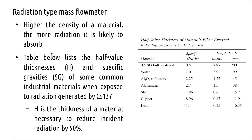To measure density using radioactive sources: if a liquid flowing through a pipe is more dense, it will absorb more radiation. From the reference table, lead absorbs the most radiation — requiring the least thickness to stop gamma rays — compared to bulk materials with specific gravity of 0.5 or even water. This absorption principle, based on Cesium-137, can be applied in chemical plants, breweries, and food processing industries.